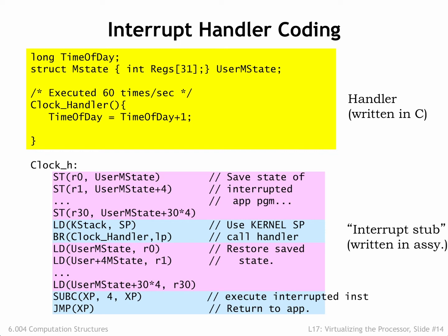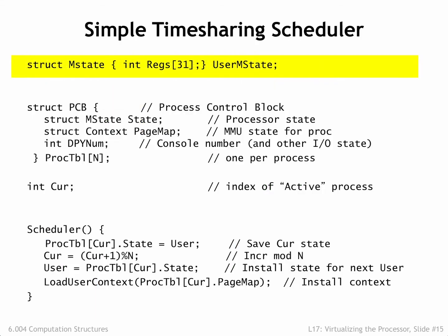But what does this all have to do with timesharing? Wasn't our goal to arrange to periodically switch which process was running? We have code that runs on every timer interrupt, so let's modify it so that every so often we arrange to call the OS's scheduler routine. In this example, we'd set the constant quantum to 2 if we wanted to call the scheduler every second timer interrupt. The scheduler subroutine is where the timesharing magic happens. Here we see the userMState data structure where the user mode process state is stored during interrupts.